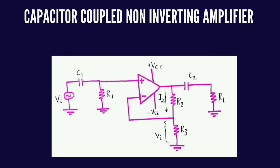Capacitor coupled non-inverting amplifier. We already learnt about non-inverting amplifier. So for a non-inverting amplifier, we will be taking the capacitor coupled at the input as well as at the output. Observe the circuit diagram carefully. An ideal op-amp with resistor R1, feedback resistor R2, and a resistor R3 that will be acting as your input resistance of the inverting terminal.